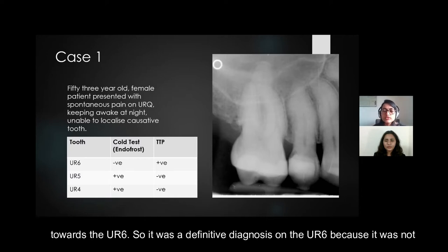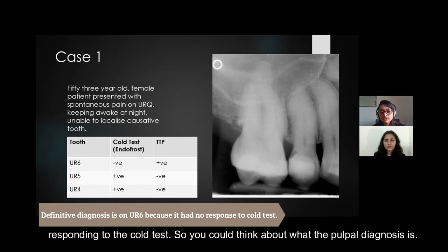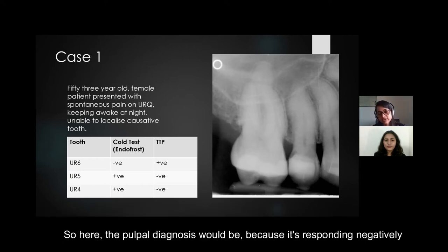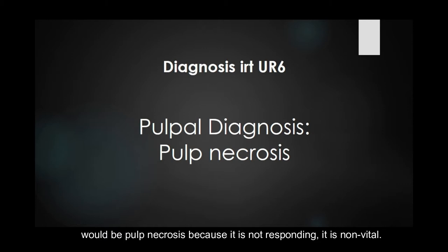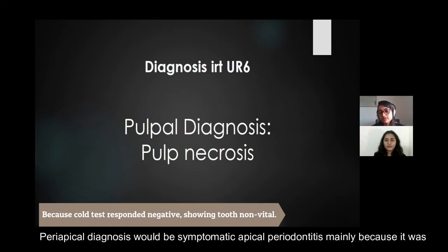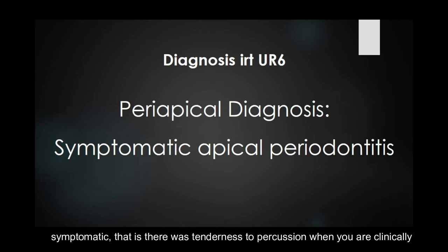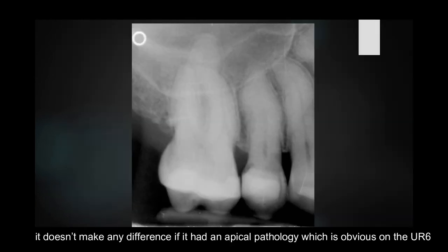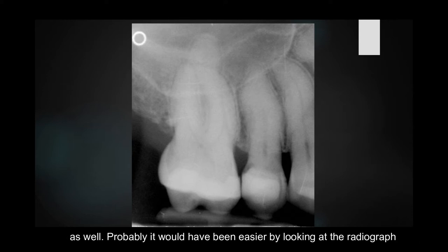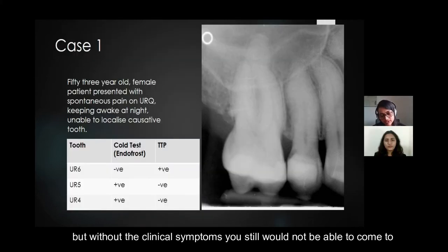The definitive diagnosis was on the upper right 6 because it was not responding to the cold test. The pulpal diagnosis would be pulp necrosis, because it's not responding — it's non-vital. The periapical diagnosis would be symptomatic apical periodontitis, mainly because it was symptomatic with tenderness to percussion. Even without obvious apical pathology on the radiograph, you still would not be able to come to a definitive diagnosis without the clinical symptoms.